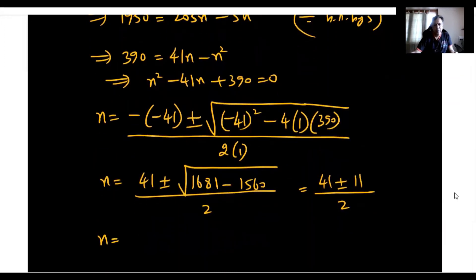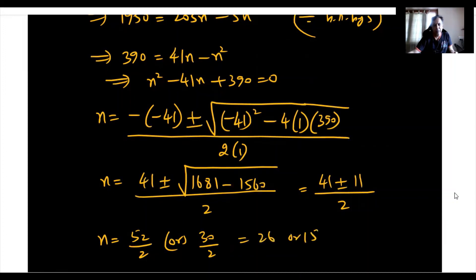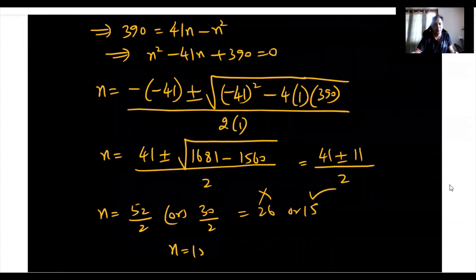So n equals 41 plus 11 divided by 2, which is 26, or 41 minus 11 divided by 2, which is 15. We ignore 26 because it would take more time. Therefore, n equals 15 months is the desired answer.